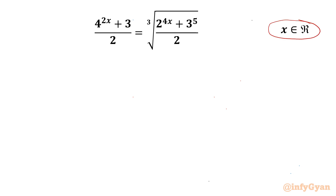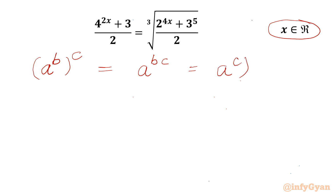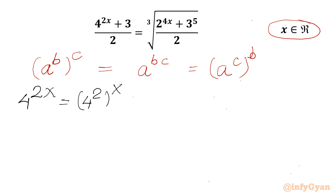Let's get started by writing the most powerful exponential property, which is: a power b, whole power c, is equal to a power b times c, which can further be written as a power c, whole power b. I will begin with 4 power 2x. Using the same property, I can write it as 4 power 2, whole power x, which is 16 power x.